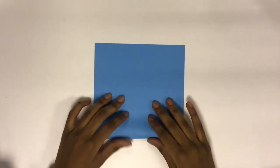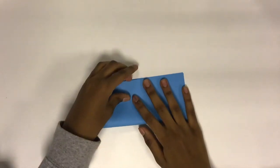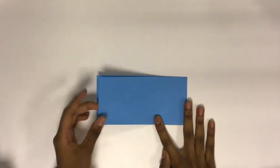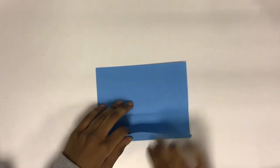First you're going to start off with your paper and fold it in half, just like this. Then you're going to open it back up, take the bottom part and fold it to the half crease.